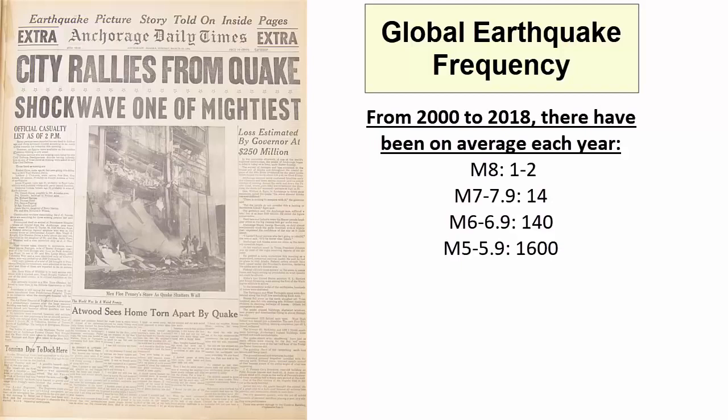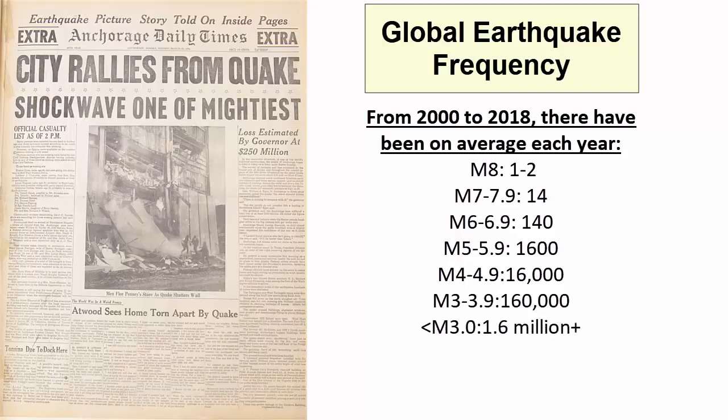So 4 to 4.9 would be about 16,000, 3 to 3.9, 160,000, and less than 3.0 is over 1.6 million. On any given week, seven days, the planet will experience thousands of earthquakes and there's bound to be one of those that makes the news.